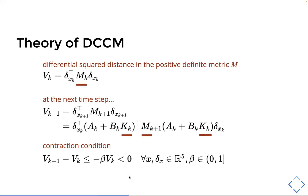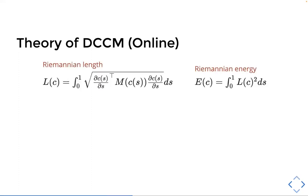So if we're able to find this and we can find our M and K matrices, then the next step we need to do is to, when we're running this controller online, is to find this minimum length with respect to metric M curve between our desired state and the actual state. So for a smooth curve C, parameterized by this S-parameter that goes between 0 and 1, that connects two points in state space, the Riemannian length and energy of the curve can be defined in this way.